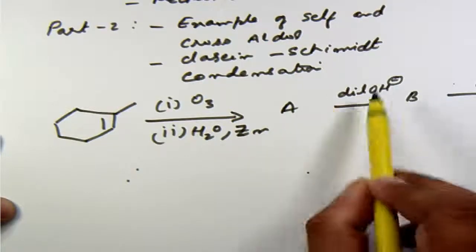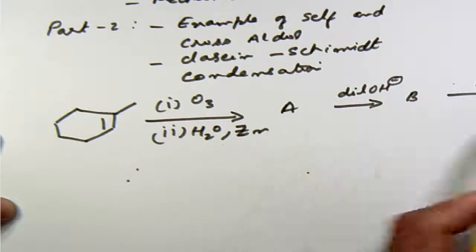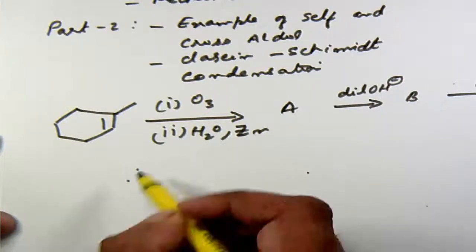So we can be right now pretty sure that the A to B is this aldol reaction and B to C completes the aldol condensation part. Now to get the product A is pretty simple.